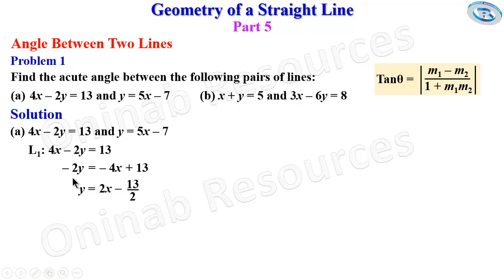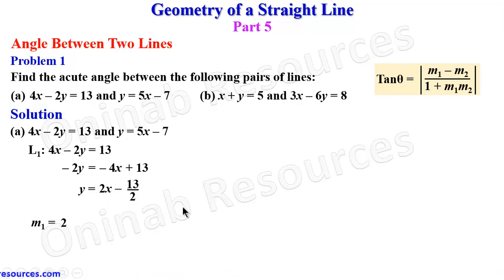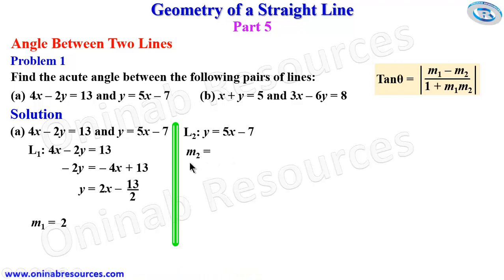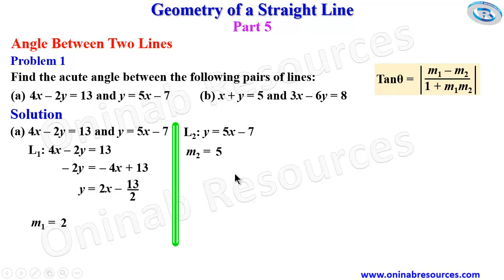So our first gradient m1 is the coefficient of x, which is 2. For the second line, y equals 5x minus 7, this is already in standard form, so m2, the coefficient of x, is 5. We then go ahead to get the angle between them. Tan theta equals the absolute value of m1 minus m2, that is 2 minus 5, over 1 plus m1 times m2, that is 1 plus 2 times 5.